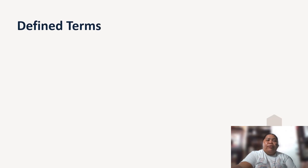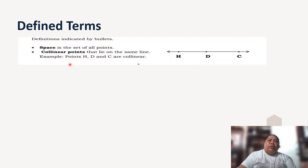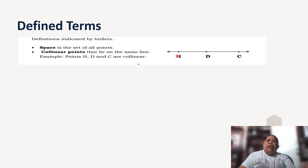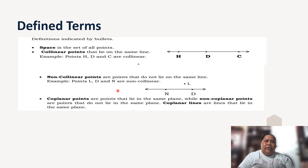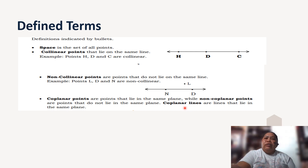We also have defined terms. From the undefined, we derive defined terms. For example, space is the set of all points. Collinear points are points that lie on the same line — for example, points H, D, and C are collinear. Non-collinear points are points that do not lie on the same line or plane — for example, points L, N, and B. We also have coplanar points, which are points that lie on the same plane, while non-coplanar points do not lie in the same plane.